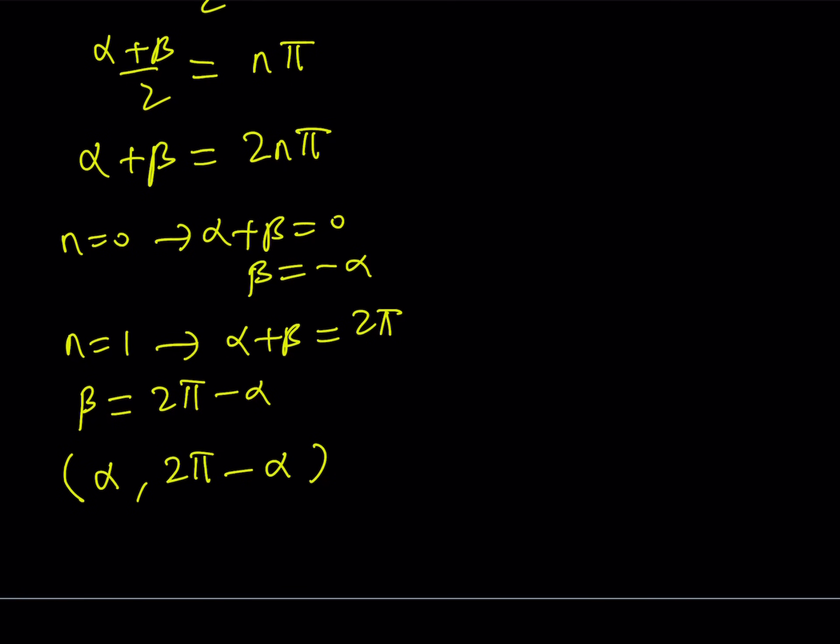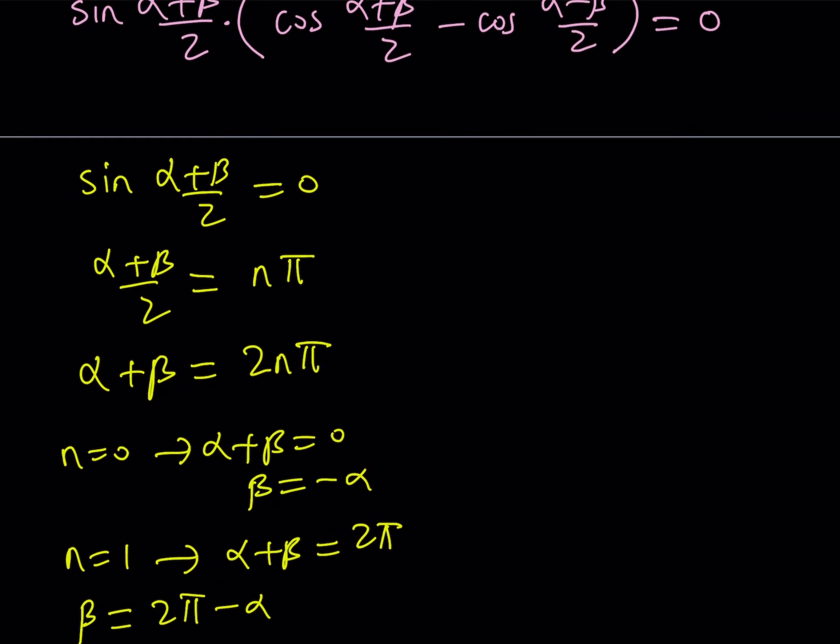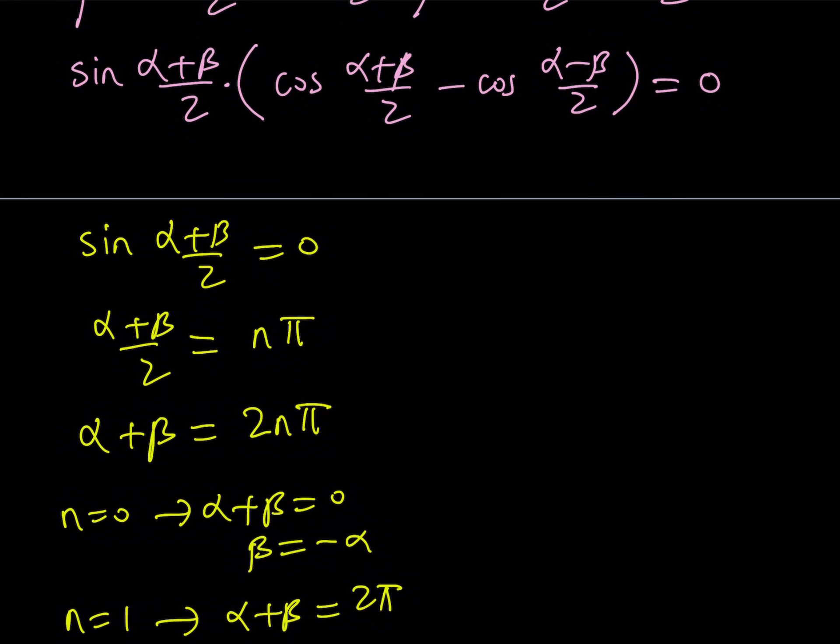As long as alpha is between 0 and 2 pi, beta is going to be the same way. We're looking for two angles. So, let's say 10 degrees and 350 degrees, or pi over 4 radians and 7 pi over 4 radians, they're also going to satisfy this equation. Obviously, from symmetry, alpha and beta can be switched around. That's my first branch, and the second branch basically involves using the second factor.